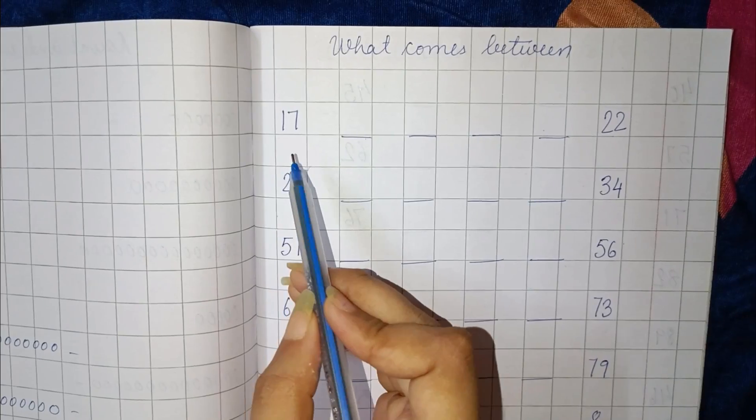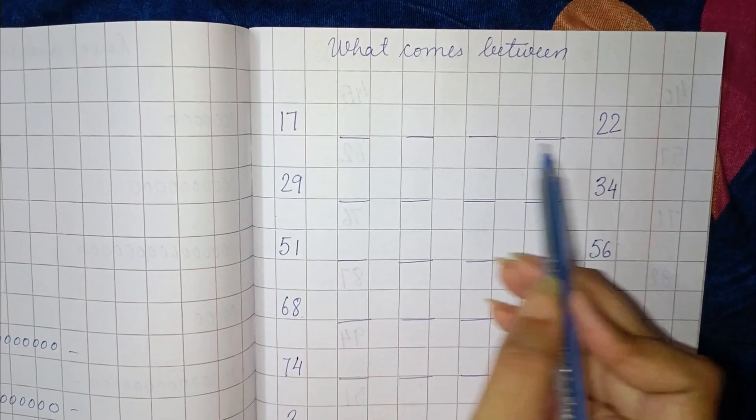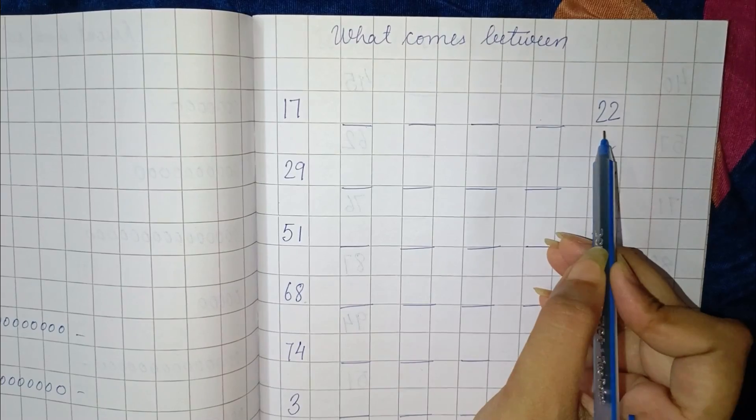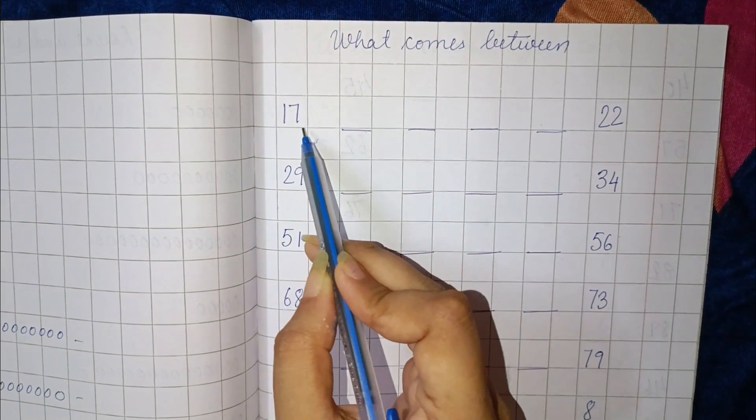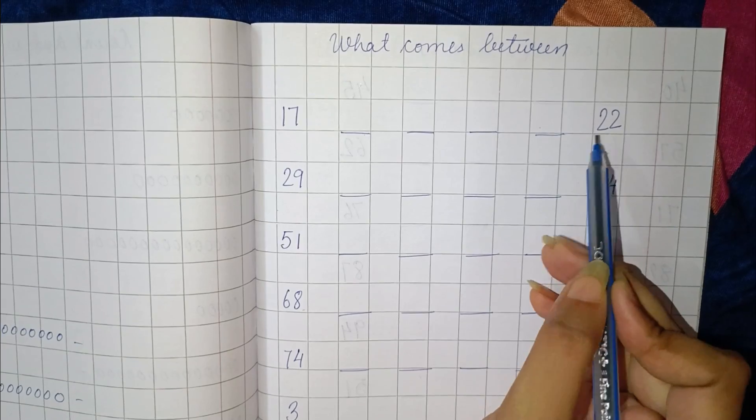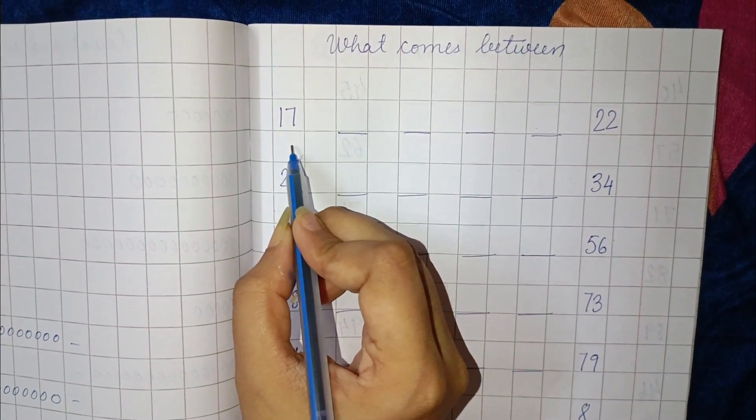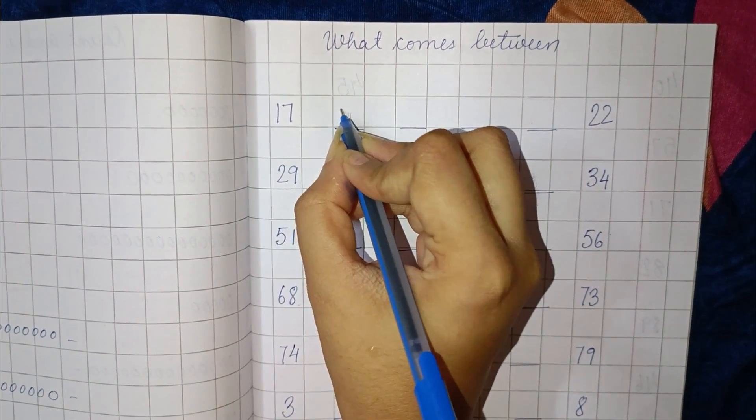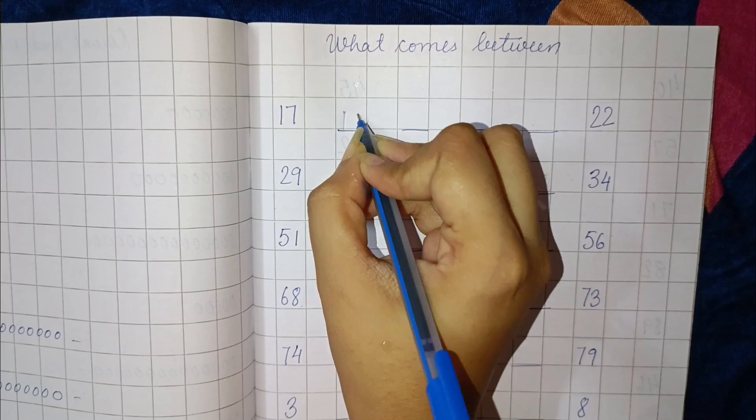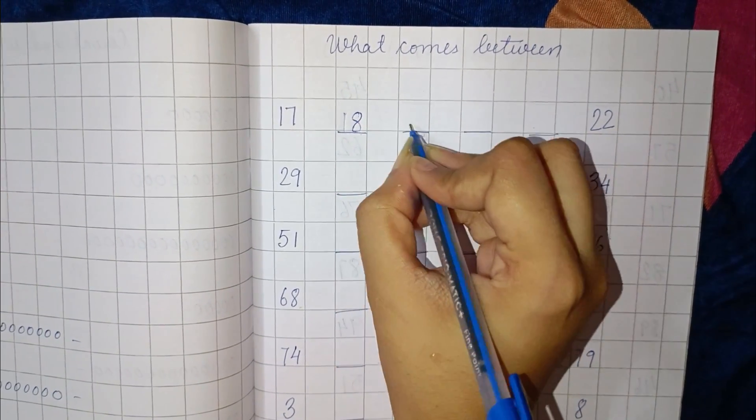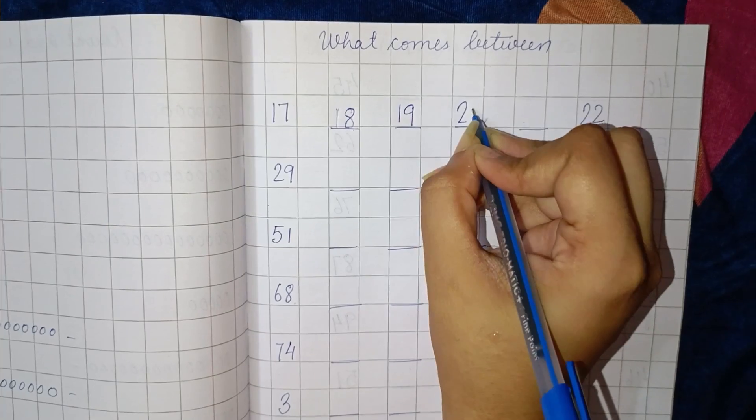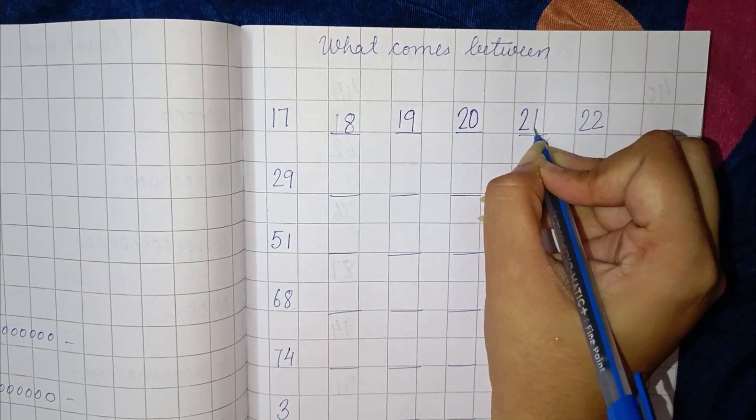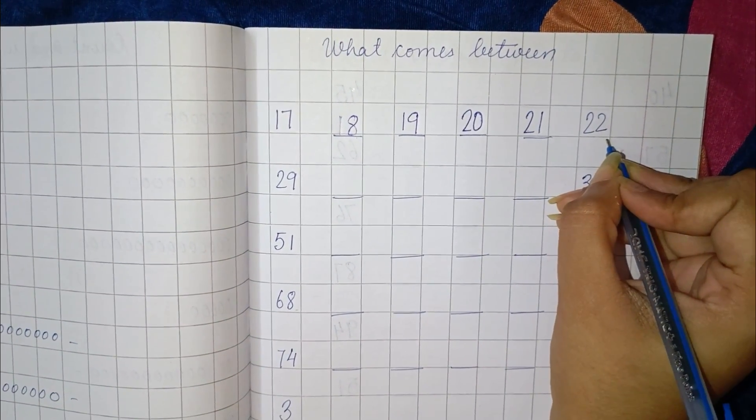Children, you can see here are two numbers, that is 17 and 22, and you have to find all the numbers between 17 and 22. So first will be 17, then 18, then 19, 20, 21, and 22.